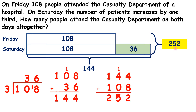Now, could we have solved this in a different way? Well, once we had 108, 108, and 36 on our bars, we didn't really need to find a separate total for Saturday, as the question was asking about both days taken together. So we could have just done 108 plus 108 plus 36 as one long column addition, and that would still have given us our answer of 252.